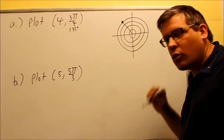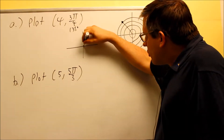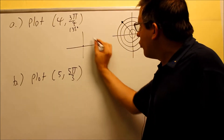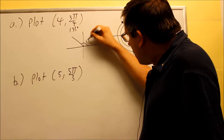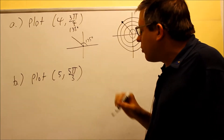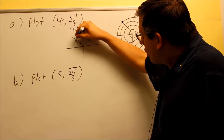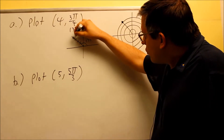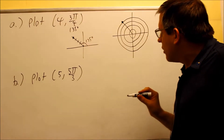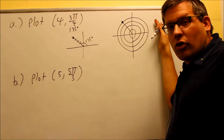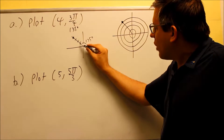Now suppose we don't have the grid paper — how are we going to do this? What you do is start the angle at the origin. 135 degrees would be in the second quadrant, so we draw a line here and label it 135 degrees or 3π/4. Then to get the four, all I'm going to do is count four on that line and plot it right there. It still ends up in the same spot — in the second quadrant — it's just that instead of using the polar grid paper, I'm basically just graphing it out like this.